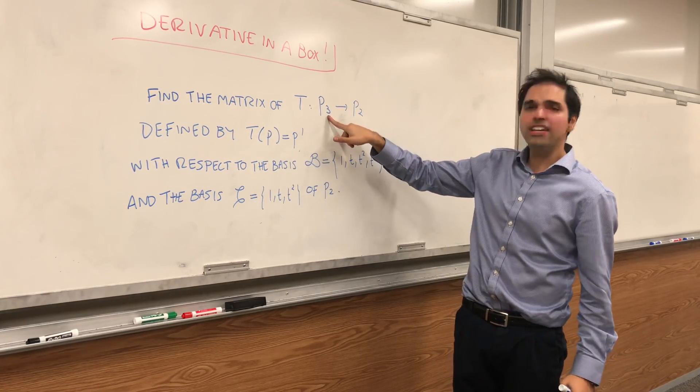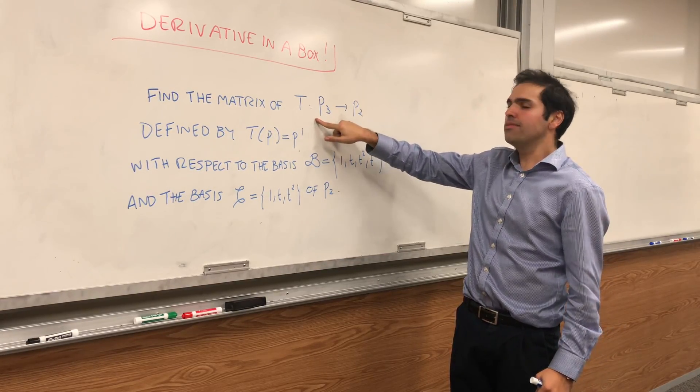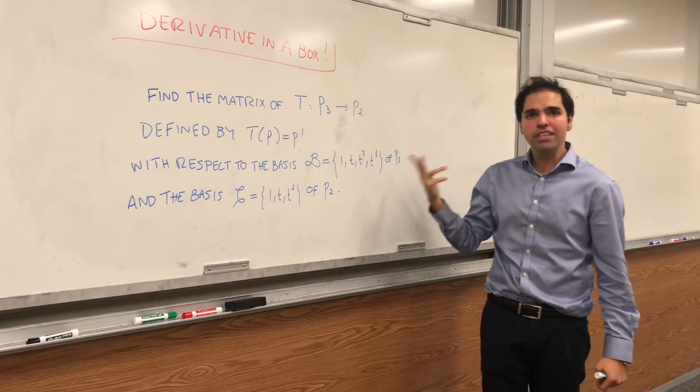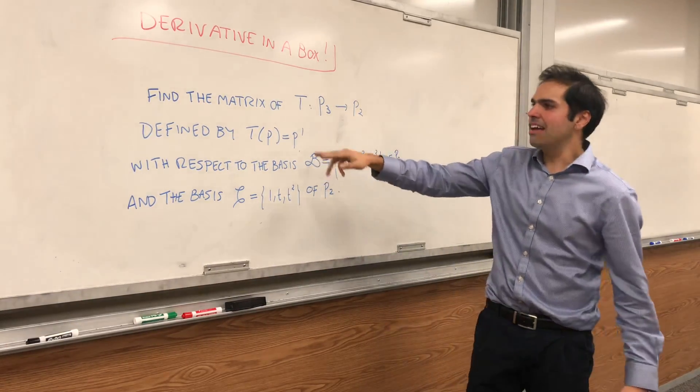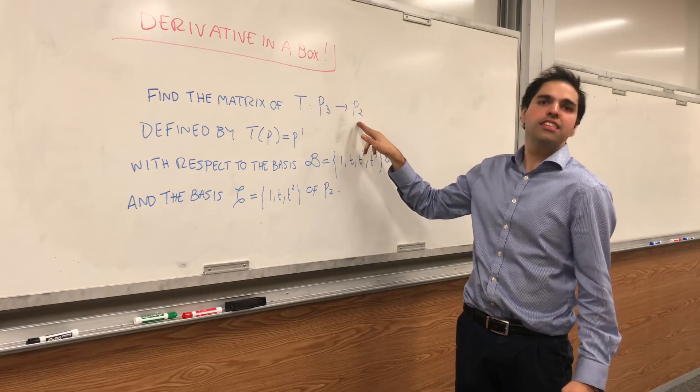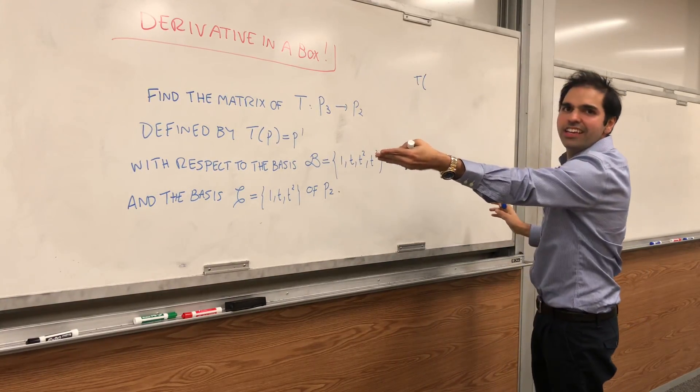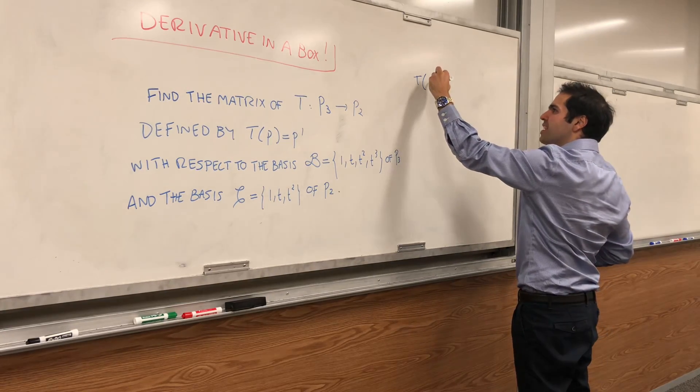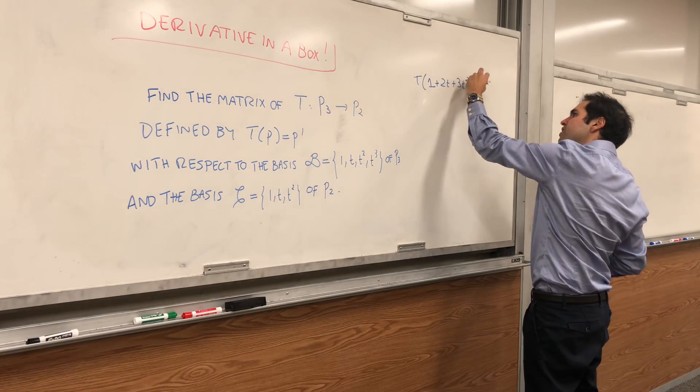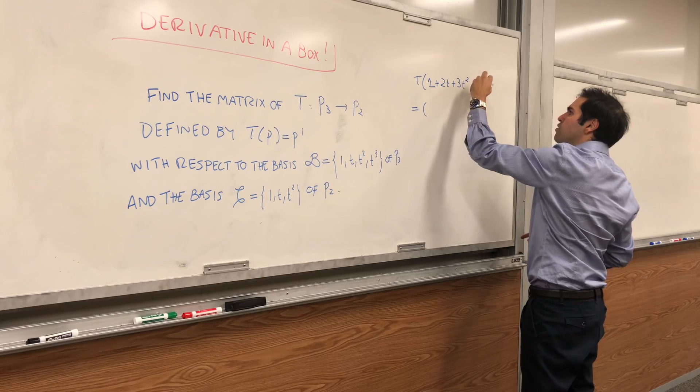So consider the following linear transformation. It takes a polynomial of degree less than or equal to 3, that's the notation P3, as an input, and spits out a polynomial of degree less than or equal to 2, namely by taking the derivative of this.